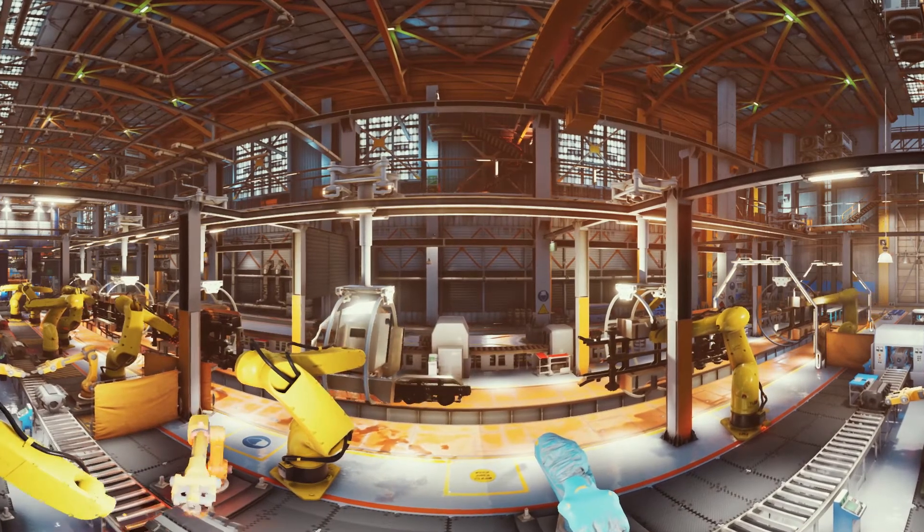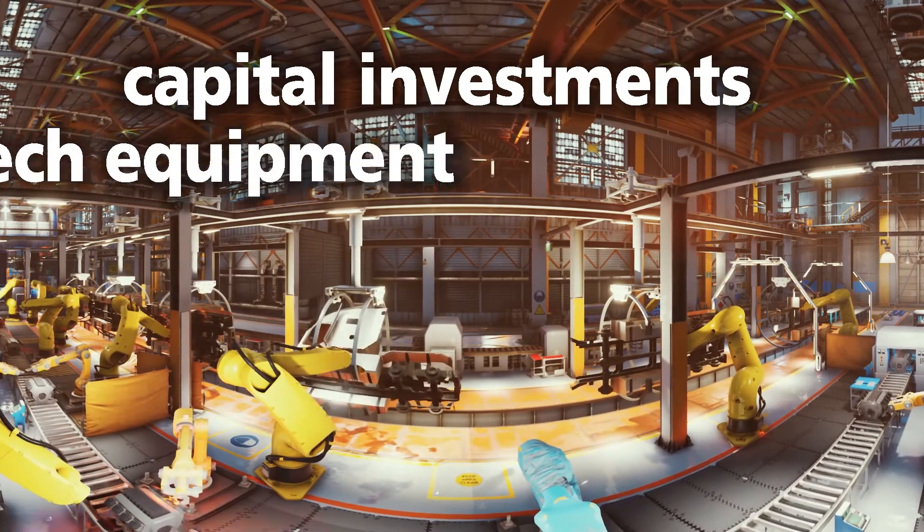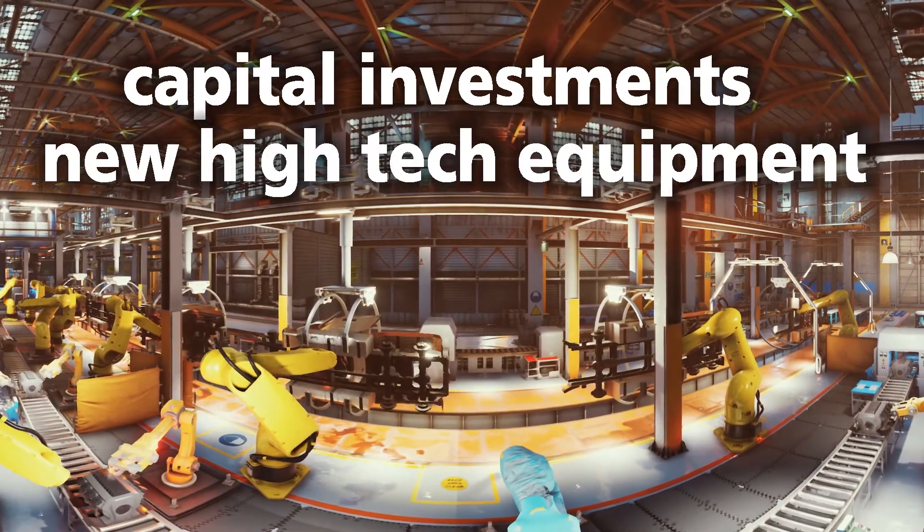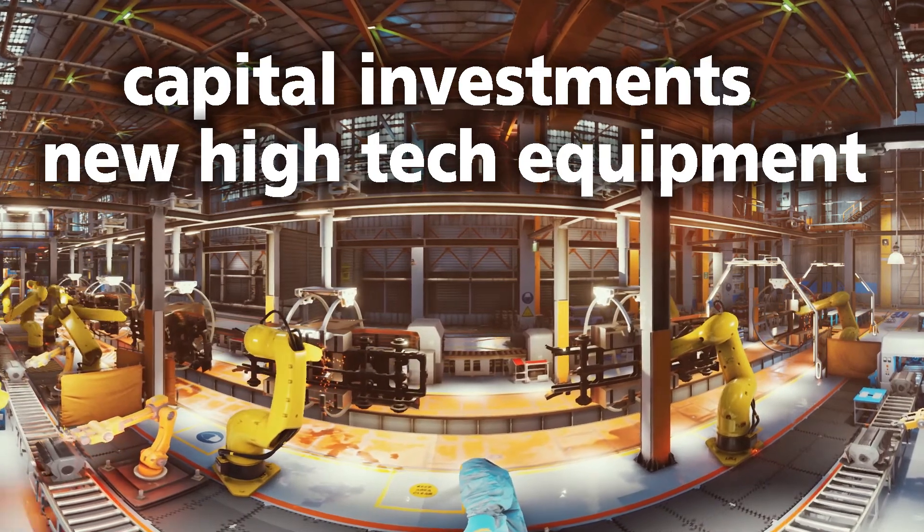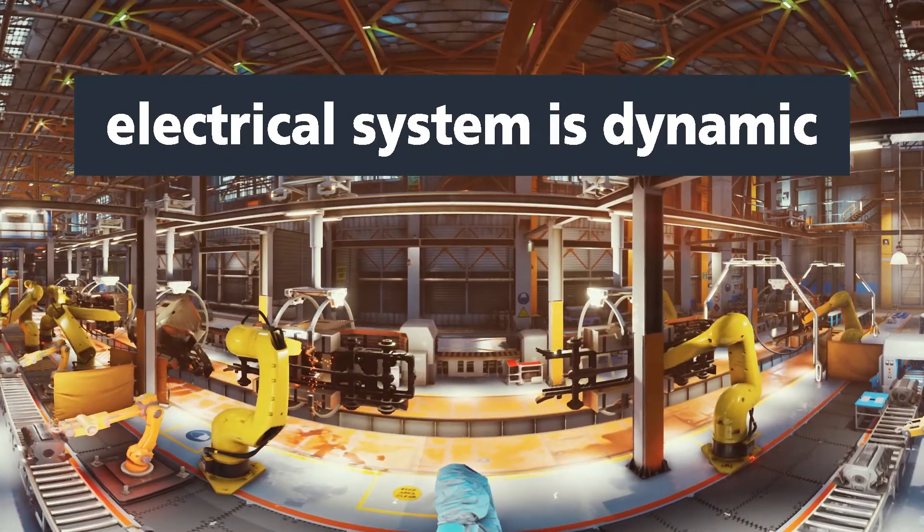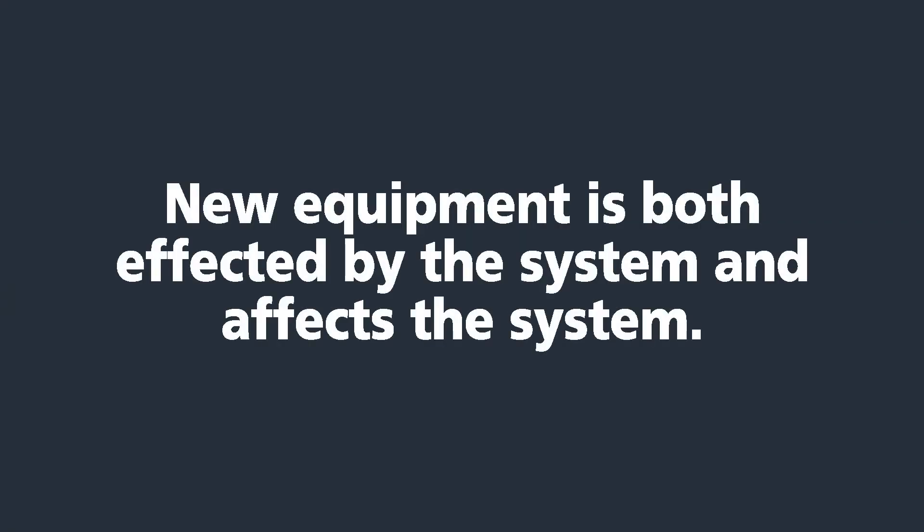Streamlining production can include capital investments on new high-tech equipment. This equipment can speed up production. However, we do want to keep in mind that an electrical system is a dynamic system. When a new piece of equipment is added to that system, it's not only that the new equipment can be affected by that system, but the new equipment can affect the electrical system.